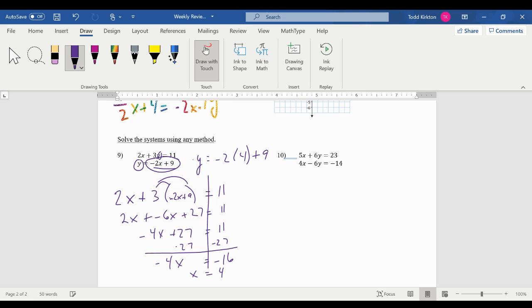Second step of substitution is to substitute. So I'm going to go back here. Y equals negative 2 times 4 plus 9. That's negative 8 plus 9, which is 1. So x equals 4, y equals 1.